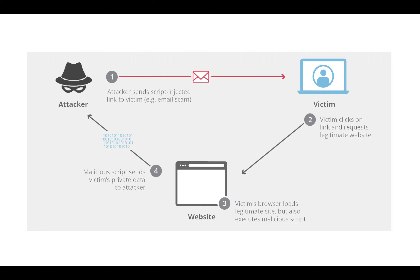This diagram highlights the flow of an example XSS attack. First, the attacker sends a script-injected link to the victim as part of an email scam. Next, the victim clicks on the link and requests a legitimate website. The victim's browser loads the website but also executes the malicious script. As a result, the malicious script sends the victim's private data to the attacker.